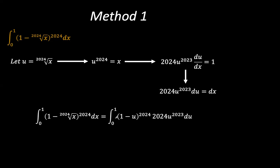So when we do the substitution: for x equals 0 we have u equals 0, and for x equals 1 we have u equals 1. For the 2024th root we have u, and 1 minus u to the power of 2024, times — in place of dx — we have 2024 times u to the power of 2023.